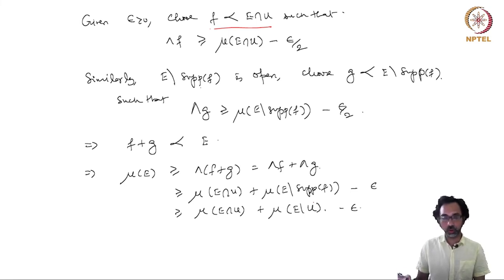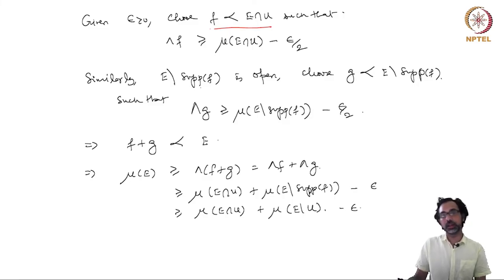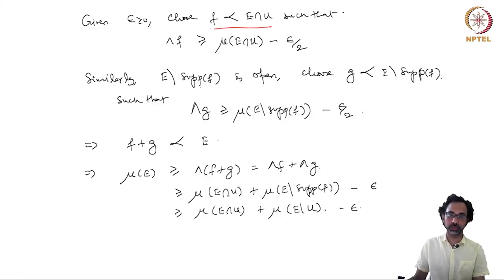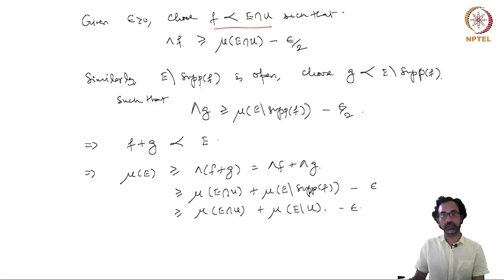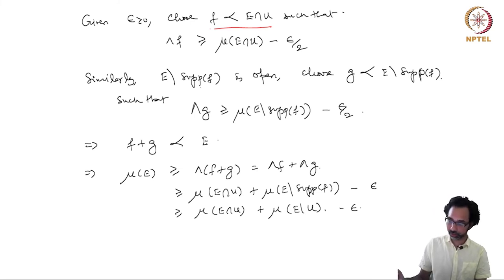This shows that all open sets are indeed in the sigma algebra of Carathéodory measurable sets B_λ, proving our second claim.